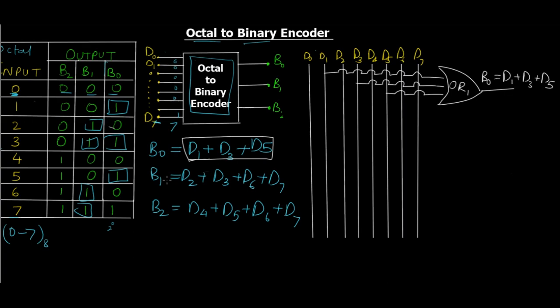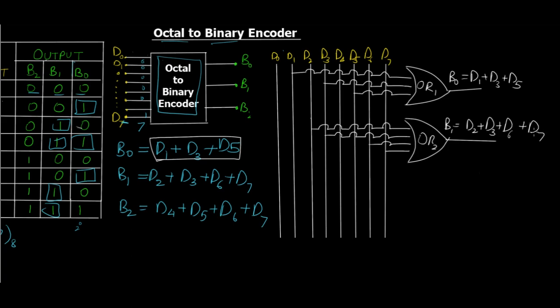Let's move on to B1. We have D2, D3, D6, D7. Starting from D2, then we have D3, we have D6, and we have D7. Again, an OR operation in between all of these. So this is OR number 2, which gives us B1, which is going to be D2 plus D3 plus D6 plus D7.